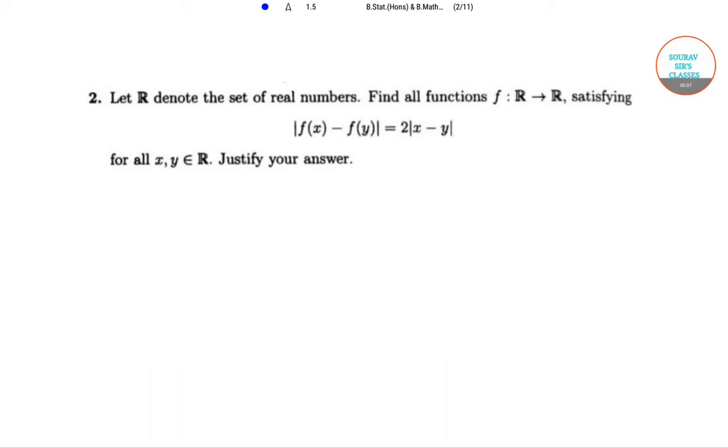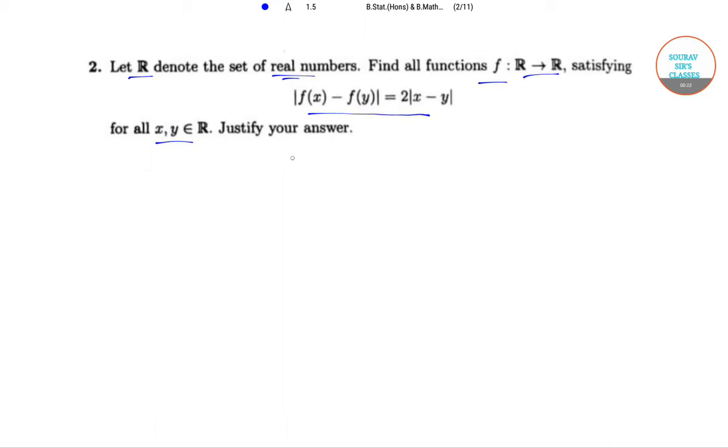Now in our first question, we have to find all the functions f mapping from R to R, where R is a set of real numbers, such that it satisfies the following condition for all x and y belonging to R. Now from the question, we have |f(x) - f(y)| = 2|x - y|.